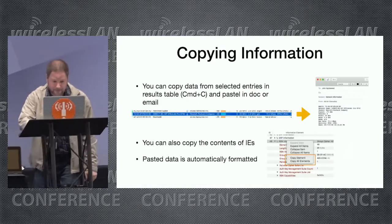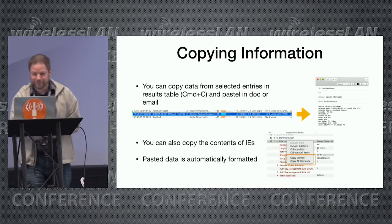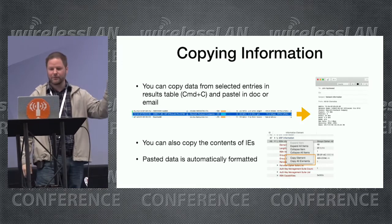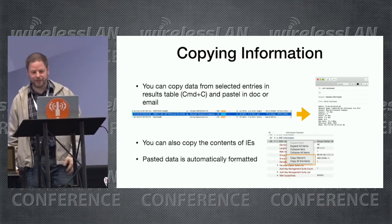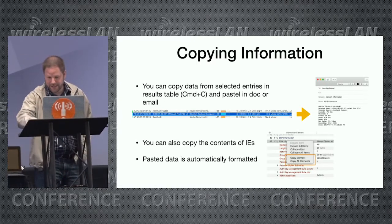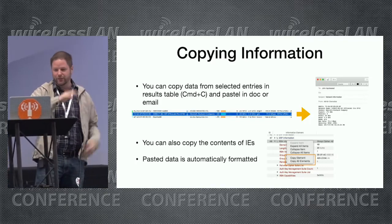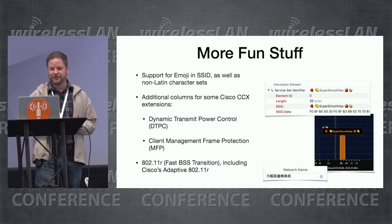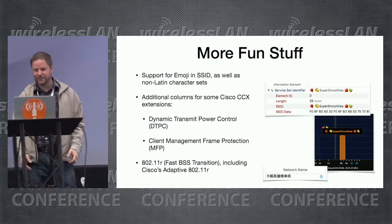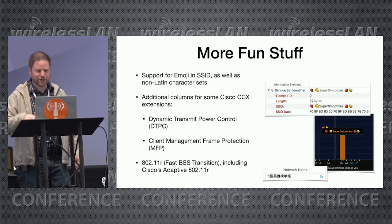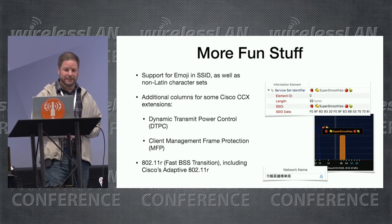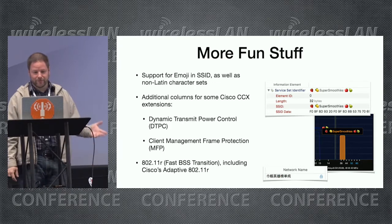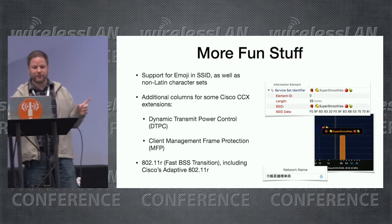You can quickly copy information from a row or an information element in the Advanced Detail view and paste it into an email — it formats it nicely. There's also support for emoji SSIDs as well as non-Latin character sets like Chinese network names. There are additional columns for Cisco CCX extensions for DTPC, management frame protection (whether enabled or not), fast BSS transition, and I worked with Sam on including support for Cisco's adaptive 802.11r.